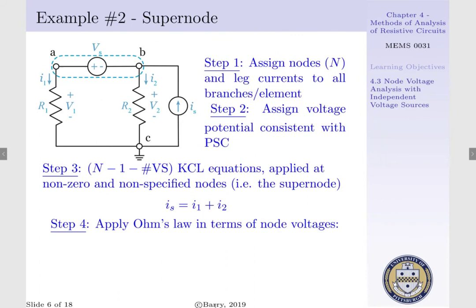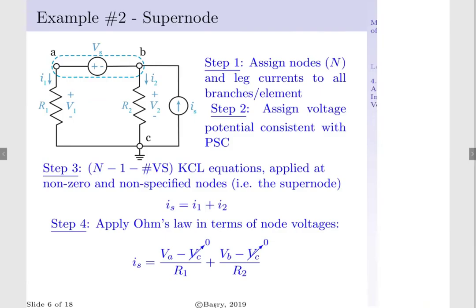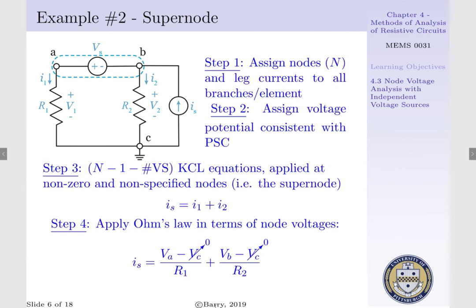Step 4 is to apply Ohm's law in terms of our node voltages. That is, Is would be equal to I1, which can be expressed as Va minus Vc per R1, where Vc is equal to 0, plus I2, which can be expressed as Vb minus Vc per R2, where Vc is also equal to 0.